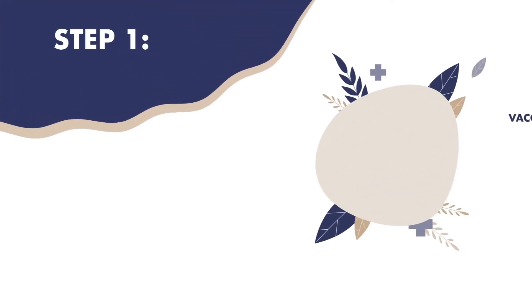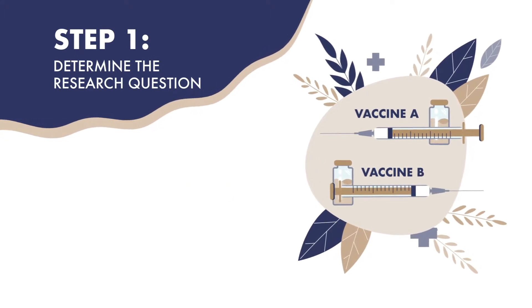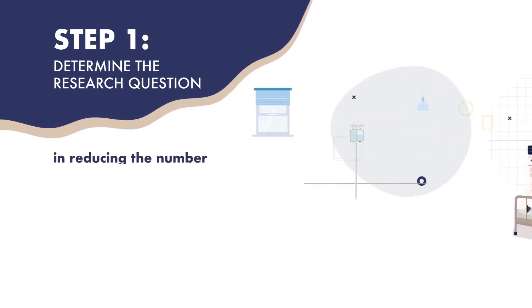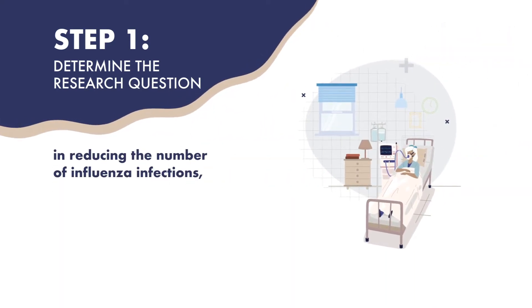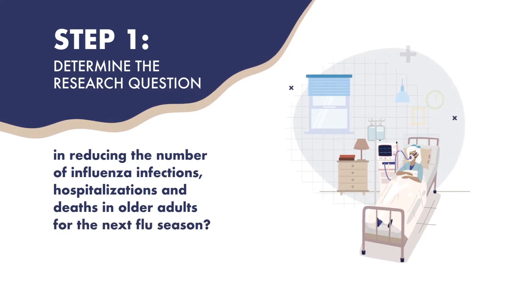Step 1: Determine the research question. A research question could be, is a new vaccine more beneficial than the vaccine currently in use in reducing the number of influenza infections, hospitalizations, and deaths in older adults for the next flu season?